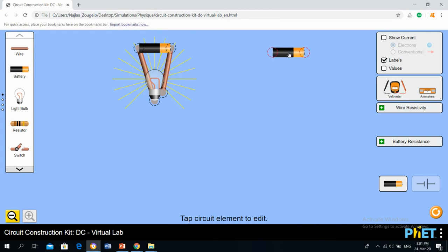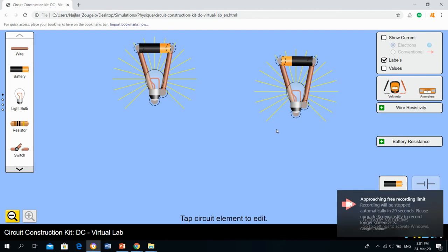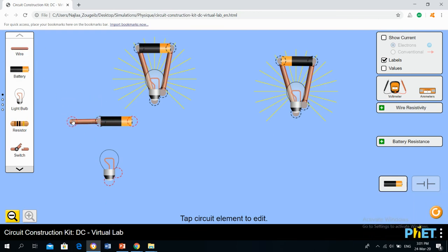Now I will try to connect the positive pole of the dry cell to the contact terminal of the lamp and the negative pole to the base terminal. The lamp doesn't shine.